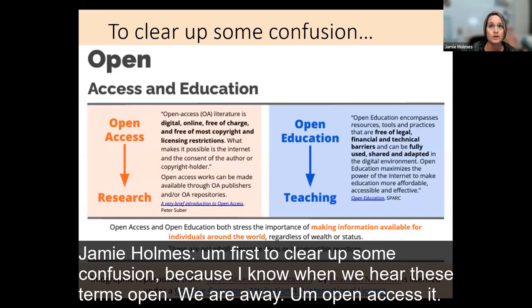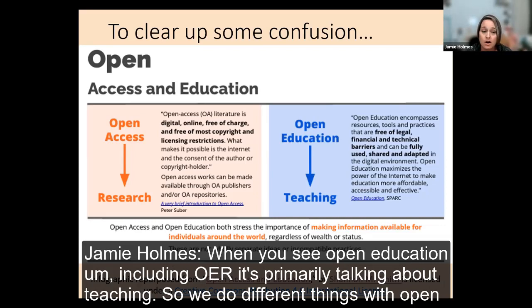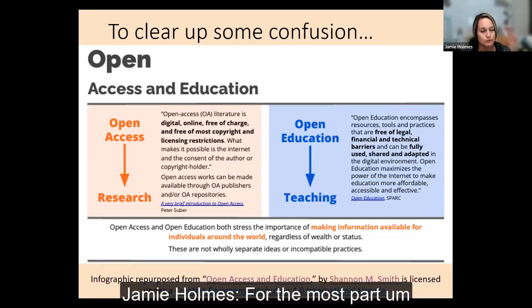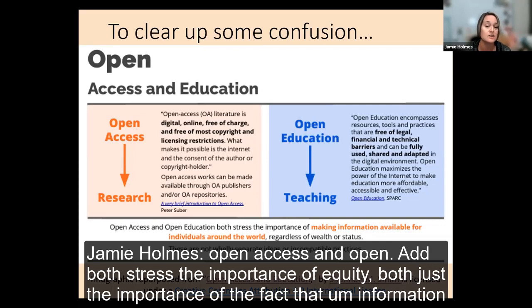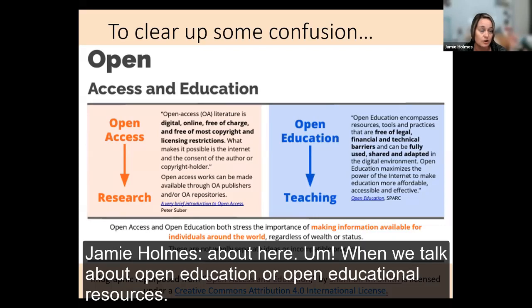First, to clear up some confusion — when we hear the terms open, OER, OA, open access — it can be confusing. A good way to think of it: when you see 'open access,' it's primarily talking about research. When you see 'open education,' including OER, it's primarily talking about teaching. Open access and open education both stress the importance of equity — that information and knowledge shouldn't be something only for the privileged and those who can afford it. When we talk about open journals and scholarly publishing not behind a paywall, that's open access, and that's not really what we're talking about here.